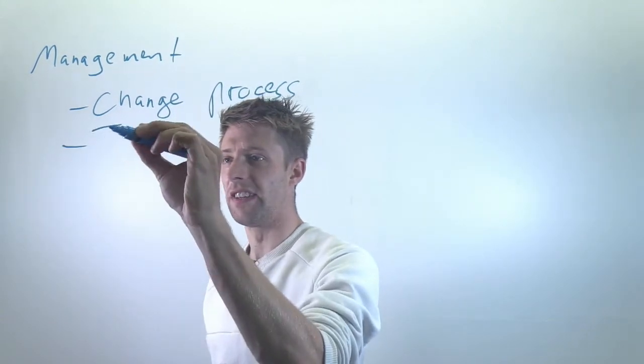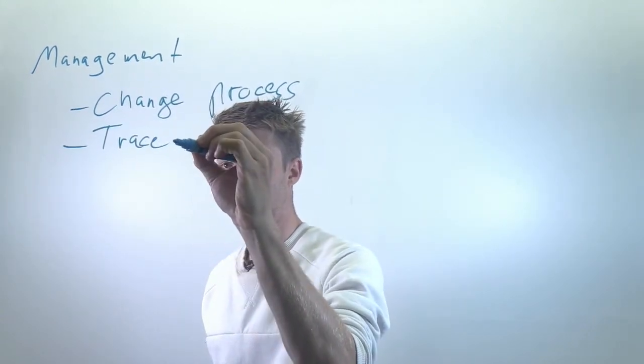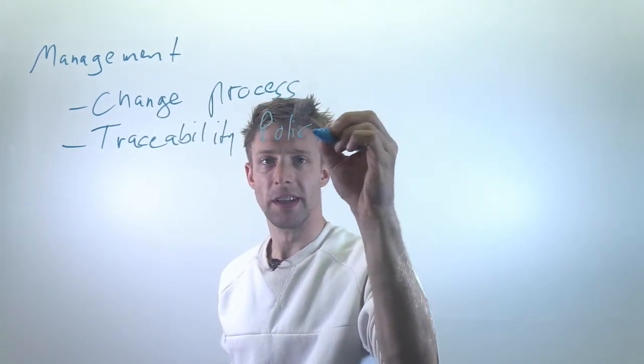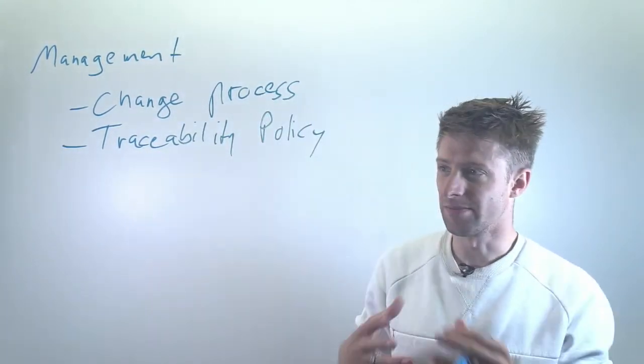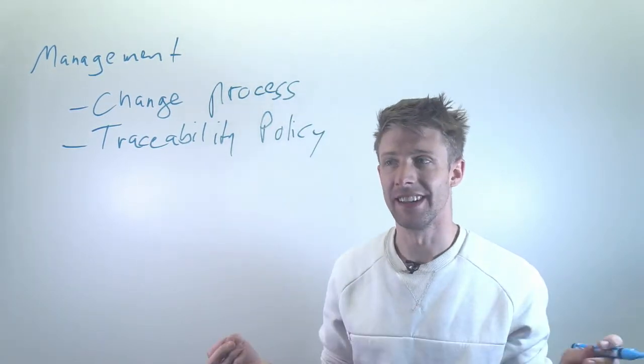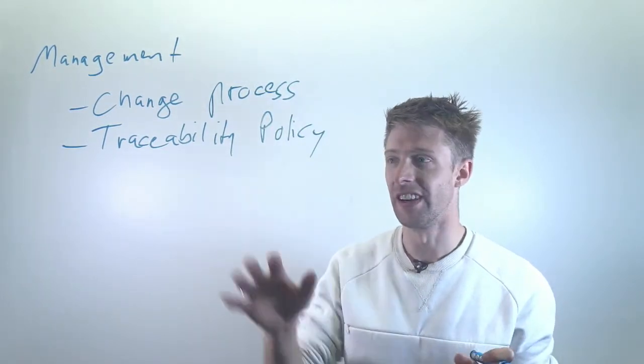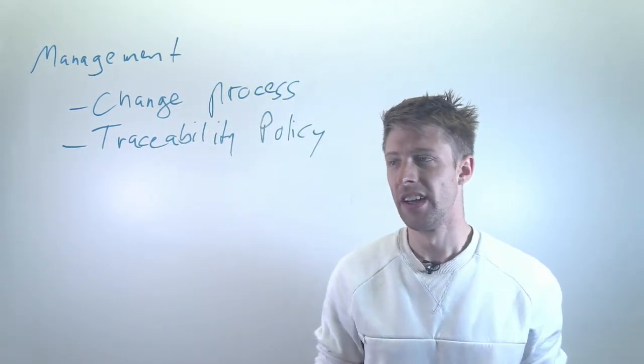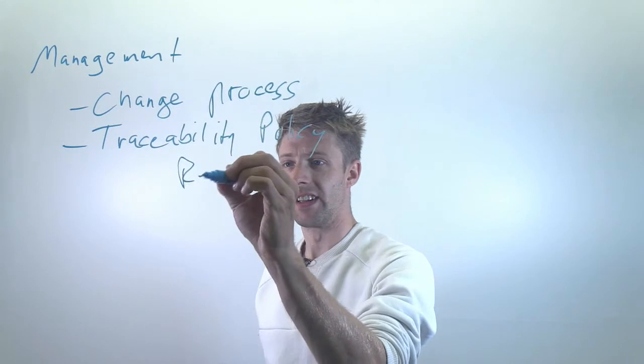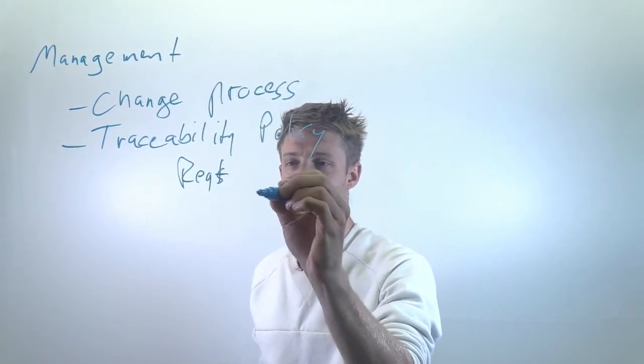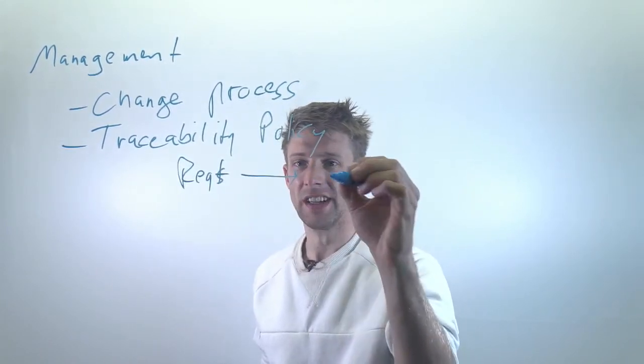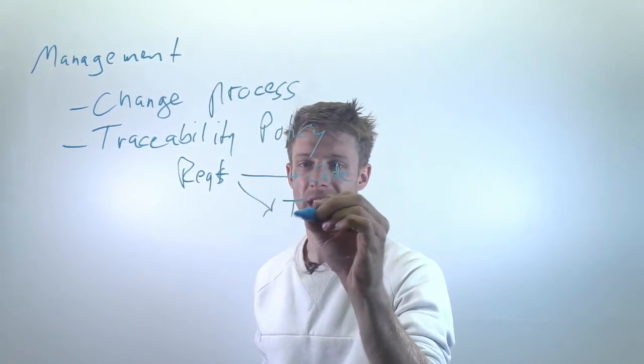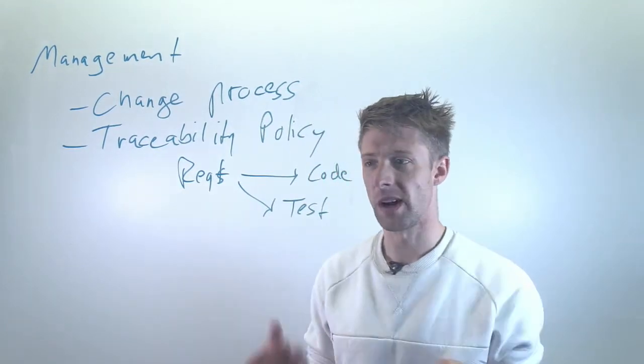The next thing we might want to have is a traceability policy. And traceability is basically the practice of connecting things to each other. In many cases requirements for example to tests or to code. So that if you look at, let's say, a requirement, an individual requirement, can you tell how this is implemented in code? Can you tell how this is tested or if it is tested? That's one way.